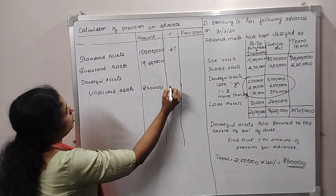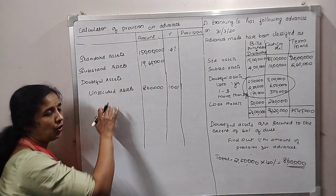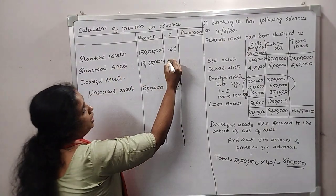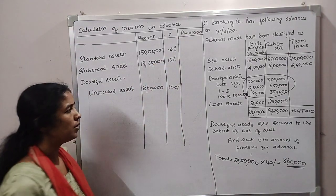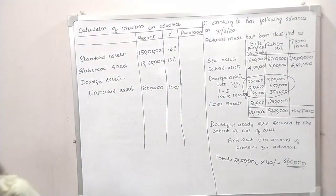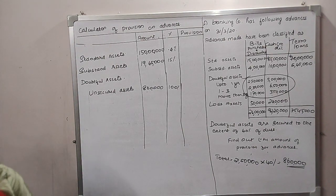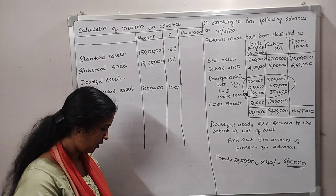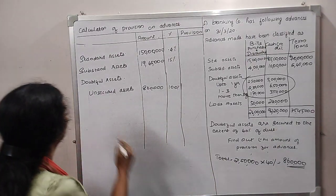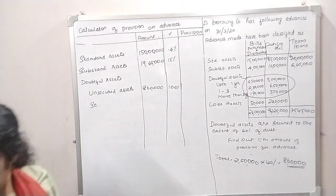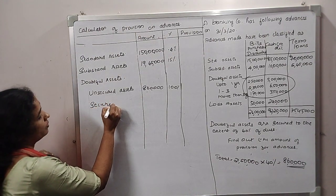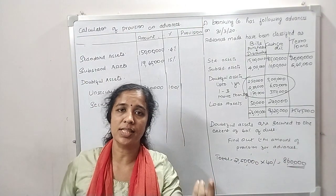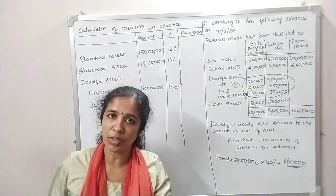We are going to get 100% provision for unsecured advances. We are going to use a bank loan. We are going to get 15% of the provision for the secured asset. Secured assets are divided by duration: up to 1 year, 1 to 3 years, and more than 3 years.